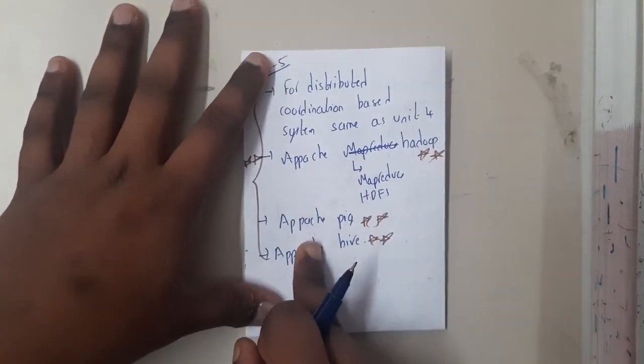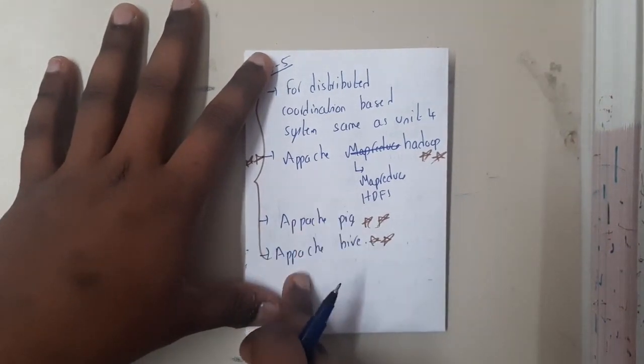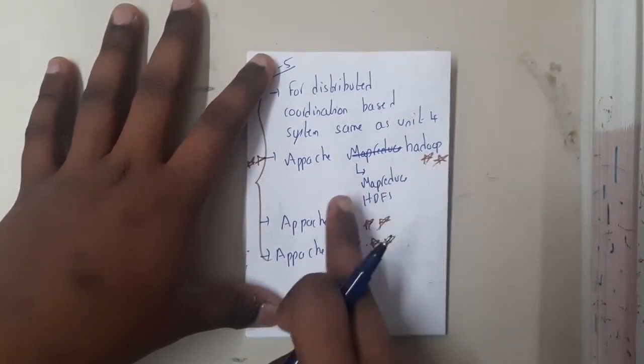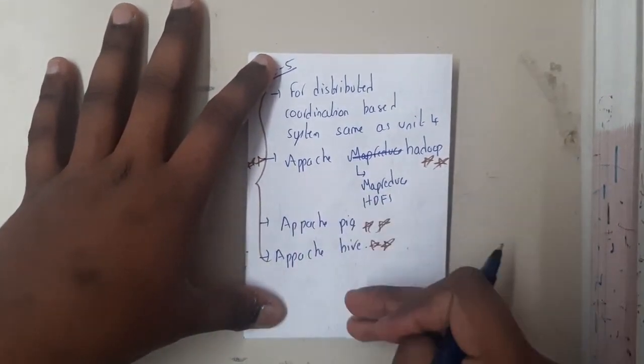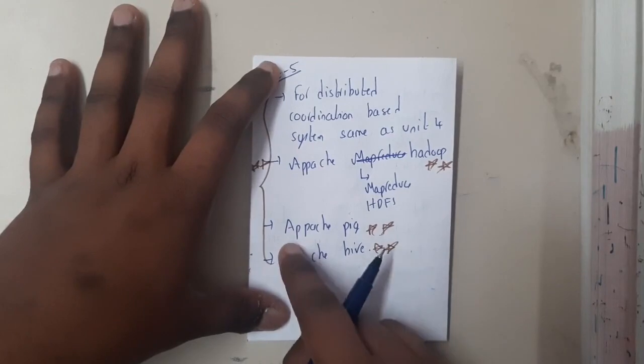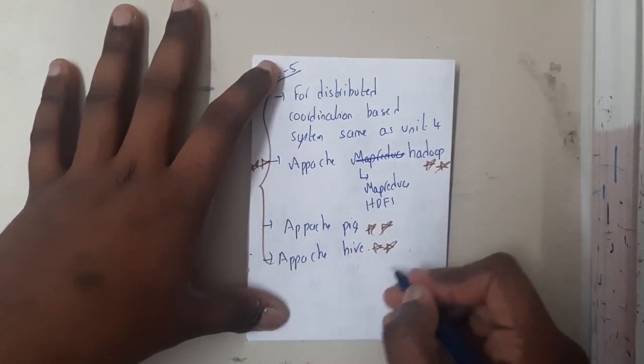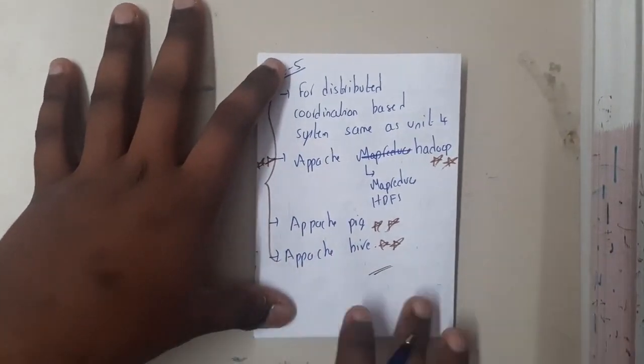It might be for five marks or it might also be for ten marks. Apache Hadoop - inside Hadoop you should be perfect with the MapReduce and HDFS. These two also can be given as separate LAQs, so remember that. Similarly Apache Pig and Apache Hive.